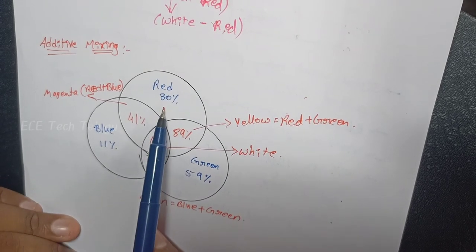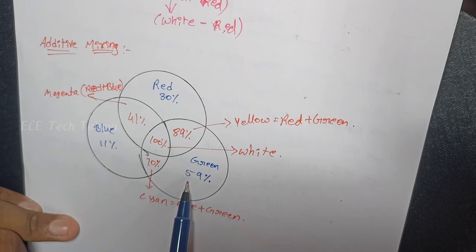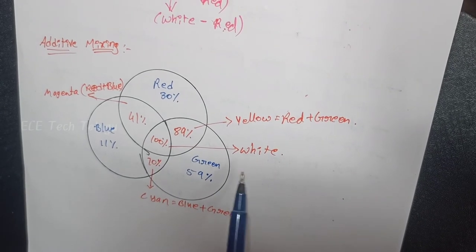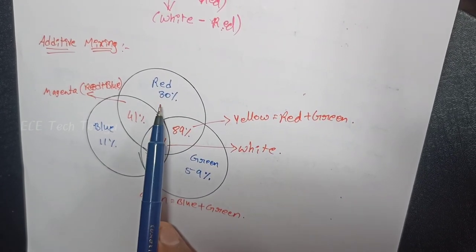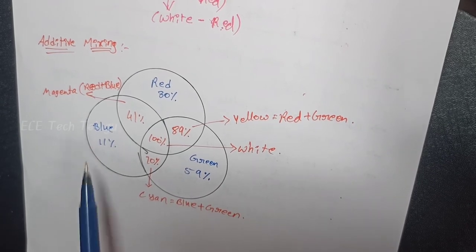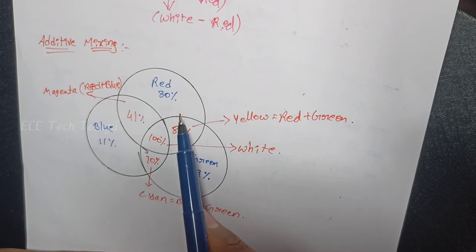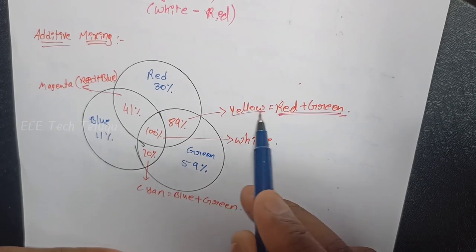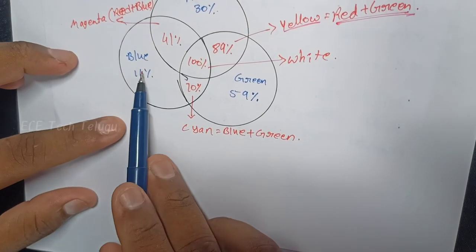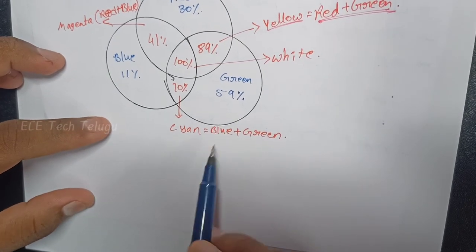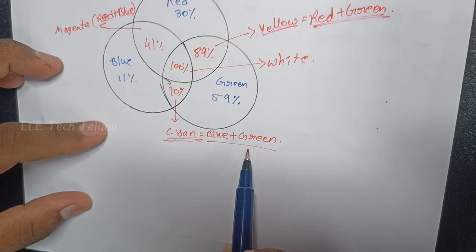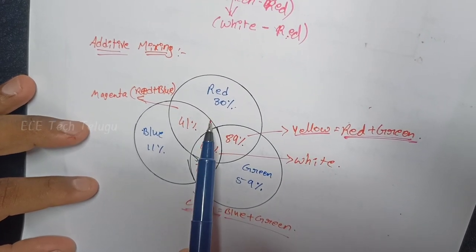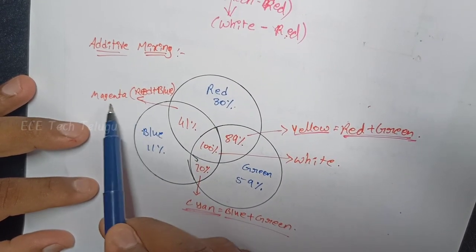To get pure white: 30% red plus 59% green plus 11% blue gives complete pure white. For yellow: 30% red plus 59% green. For cyan: 11% blue plus 59% green. For magenta: 30% red plus 11% blue.